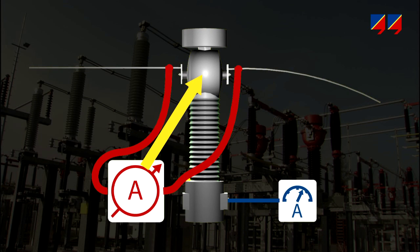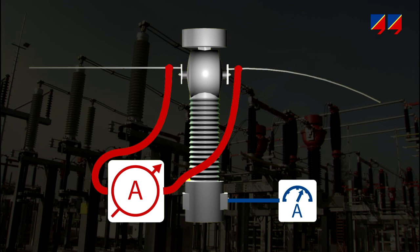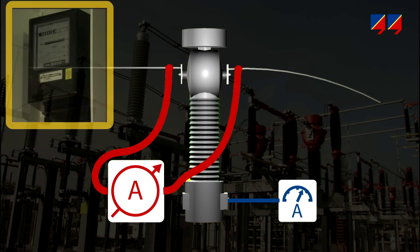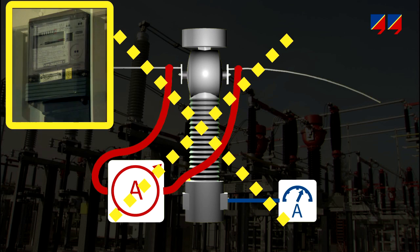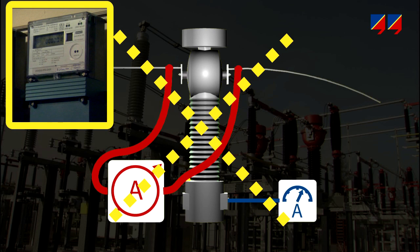Injecting current on the primary side using a portable high current source and measuring secondary current allows the ratio and wiring of a particular core and tap to be checked. This method is insufficient, particularly for verifying metering CTs, because of limitations in the current amplitude, limited accuracy, and the inability to consider different burden values.